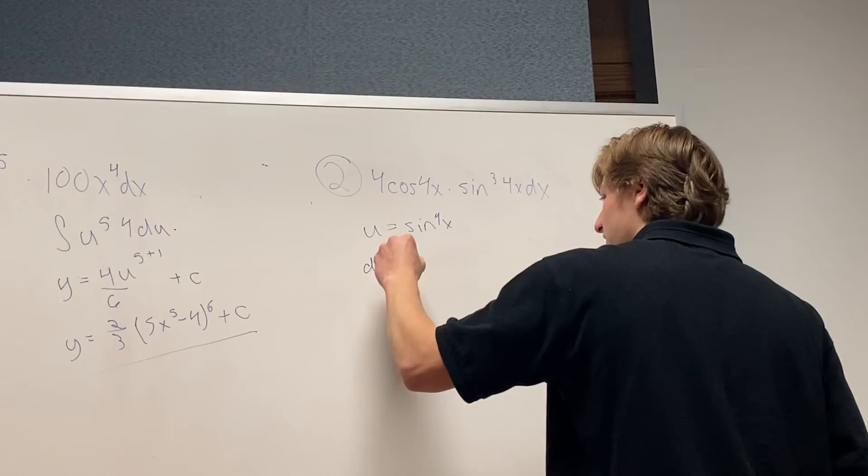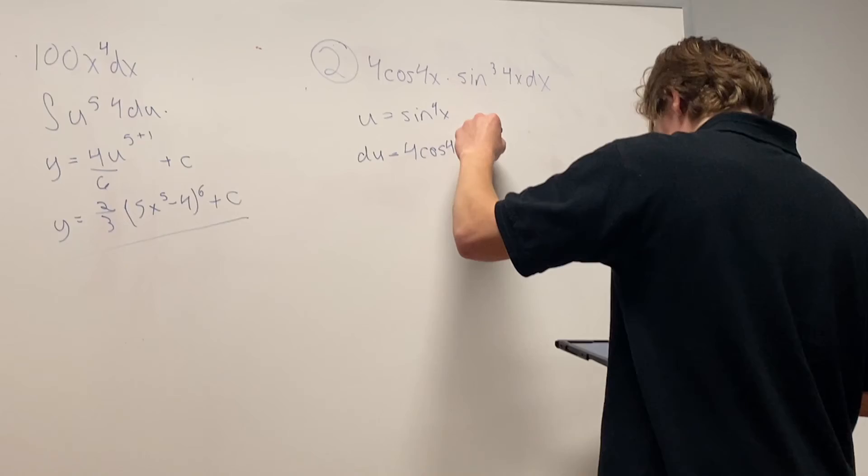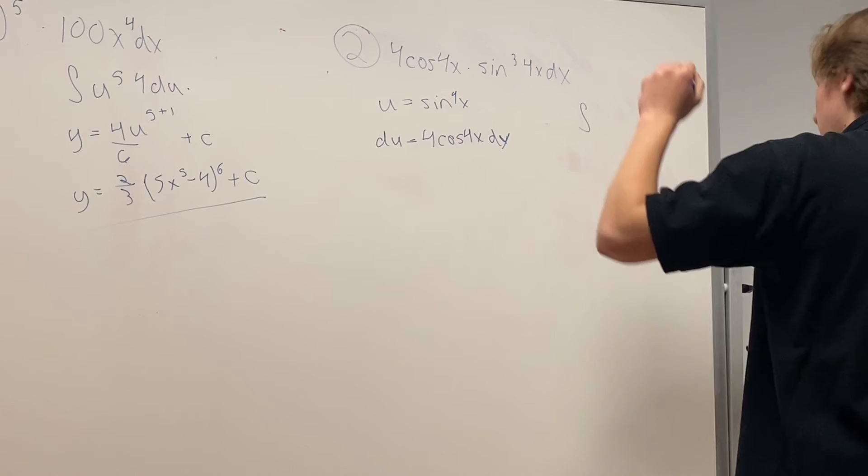And what's our du? It's going to be 4 cosine 4x, and then dx. Perfect. Alright, so now head over to this side of the problem. What do we got? It's going to be the integral u to the 3rd power, du. Very good.